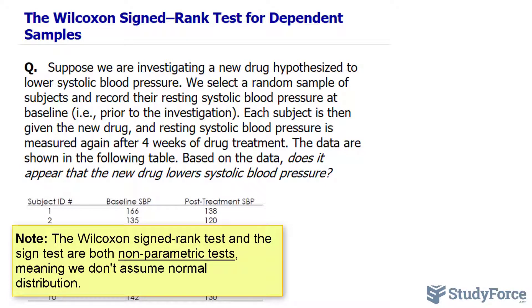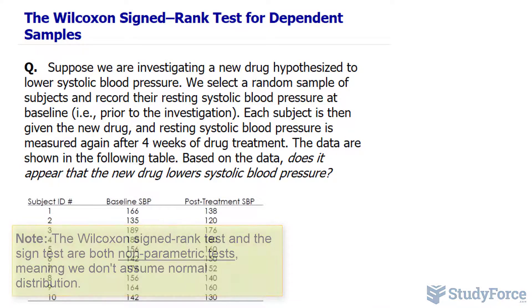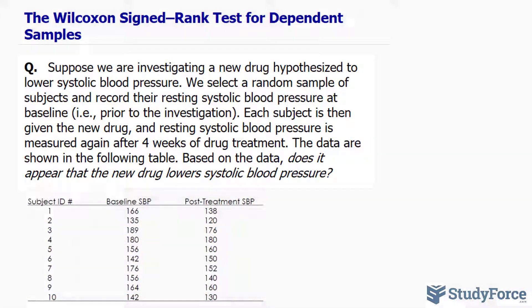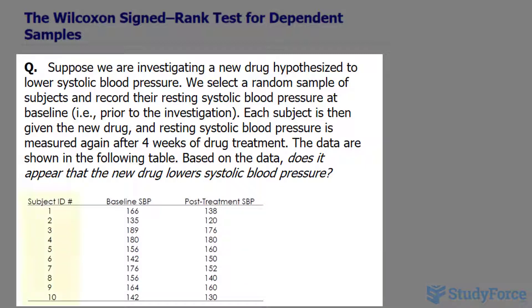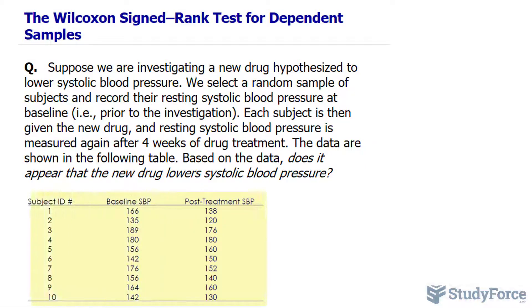Now also in that video we used the exact same question, but in case you missed it, the question reads: Suppose we are investigating a new drug hypothesized to lower systolic blood pressure. We select a random sample of subjects and record the resting systolic blood pressure at baseline. Each subject is then given a new drug and the resting systolic blood pressure is measured again after 4 weeks of drug treatment. The data are shown in the following table. Based on the data, does it appear that the new drug lowers systolic blood pressure?